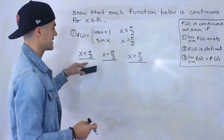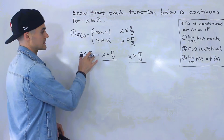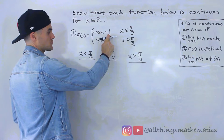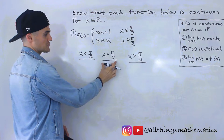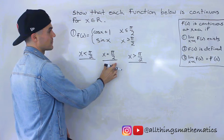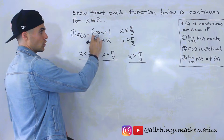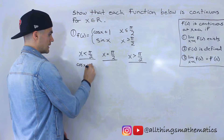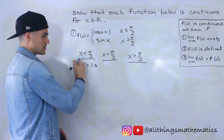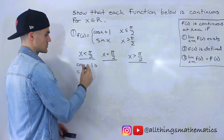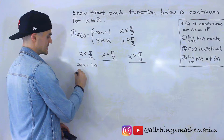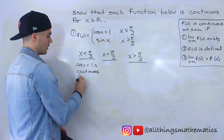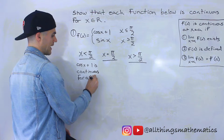Starting with x less than π/2: when x is less than or equal to π/2, the function is cos(x) plus one, but we'll deal with the equal case separately. Notice that cos(x) plus one, if we just look at that function on its own — not part of this piecewise function — is continuous for all x∈ℝ.